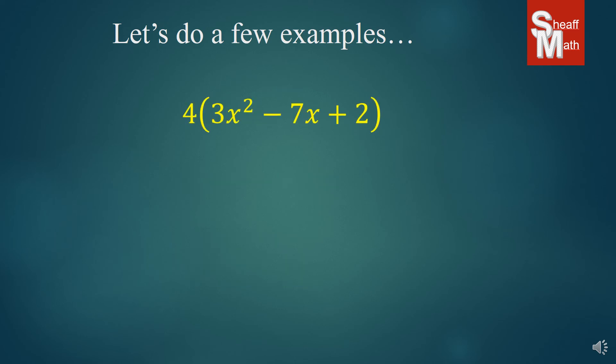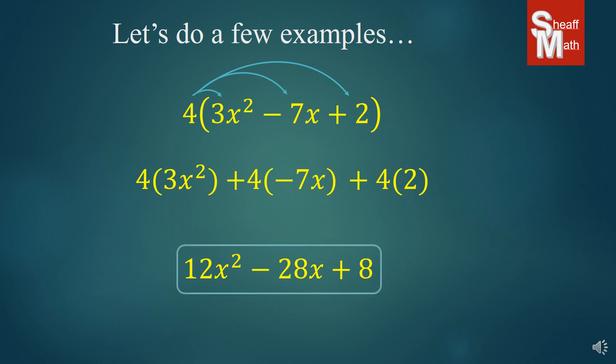Now sometimes we're multiplying by a trinomial. And so we are going to distribute that 4 all the way through to all three of them. And we're going to add all of the products together. So this is what it looks like. Make sure you put that plus sign in between them and negatives in parentheses if you have to. And so we simplify and we get 12x squared minus 28x plus 8.